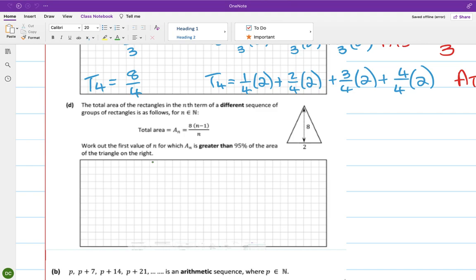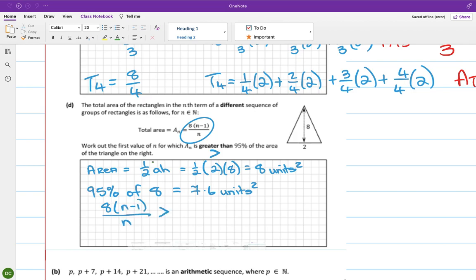So the area of that triangle is half a by h, which is a half 2 by 8, which is 8 units squared. 95% of 8 units squared is 7.6. So work out the first value of n for which a_n, which is this up here, is greater than. So do we do 8 times n minus 1 over n is greater than 7.6 and just solve? I'm going to multiply across by n.